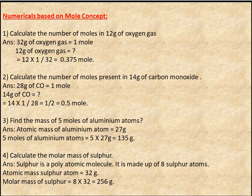Q3: Find the mass of 5 moles of aluminium atoms. Atomic mass of aluminium = 27g. Mass = 5 × 27 = 135 grams.